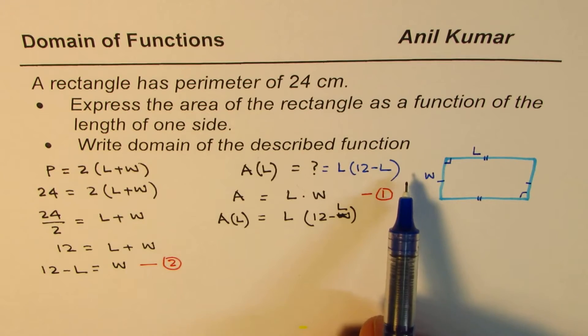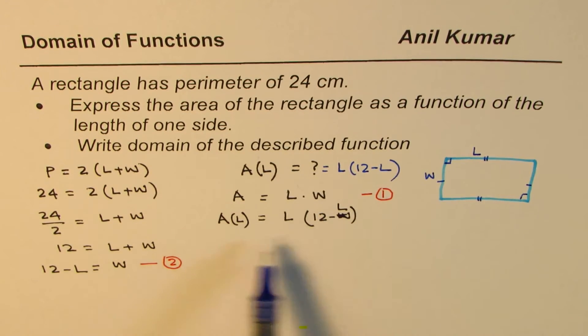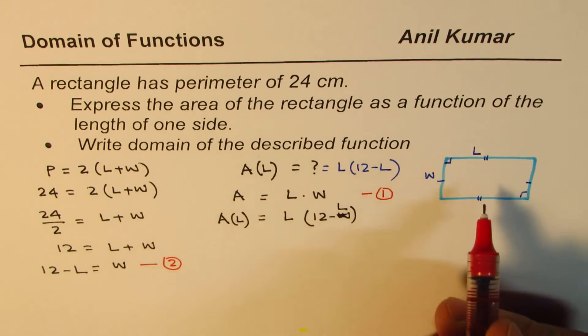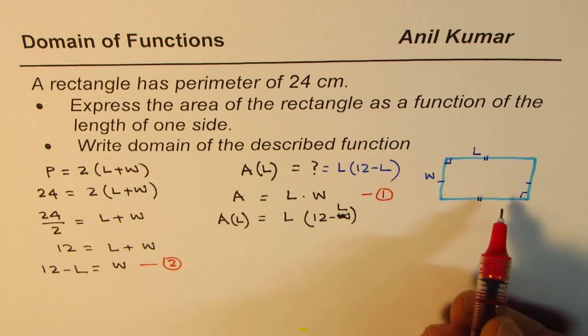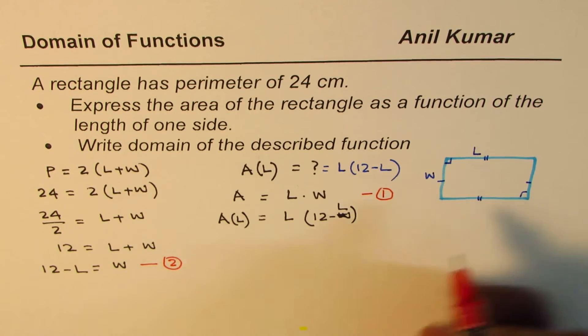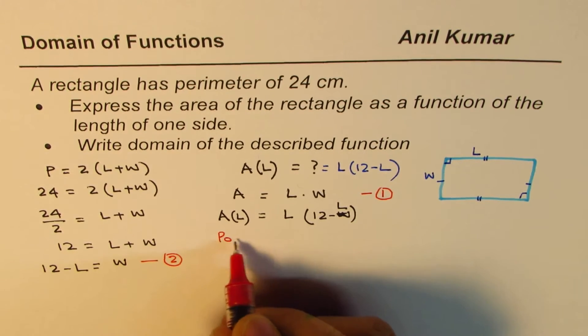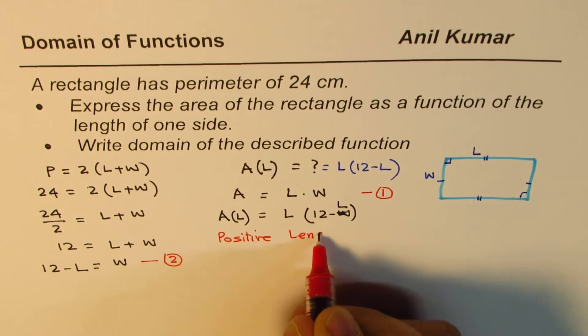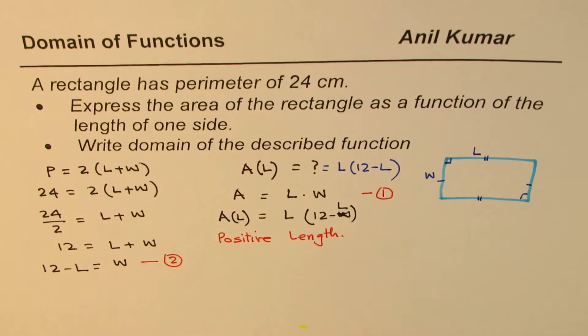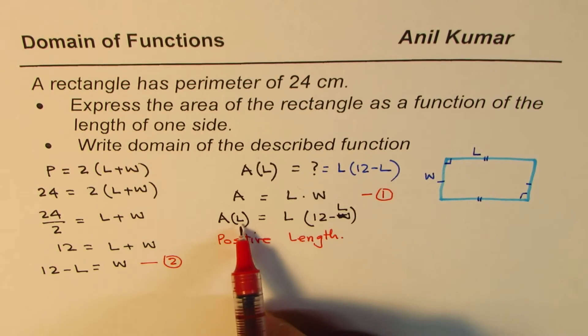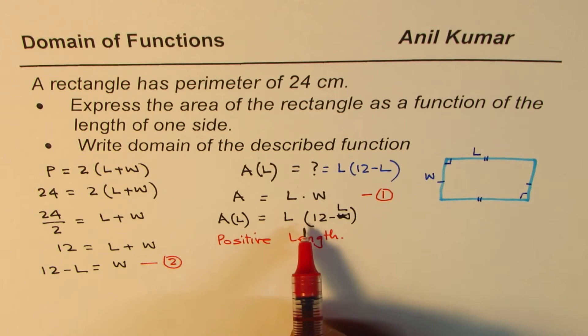Now let's consider how to write domain of this particular function. The critical thing here is that these are dimensions of a rectangle, so they have to be positive. So we are looking for positive length. It cannot be negative. That's the whole idea. So L has to be positive.